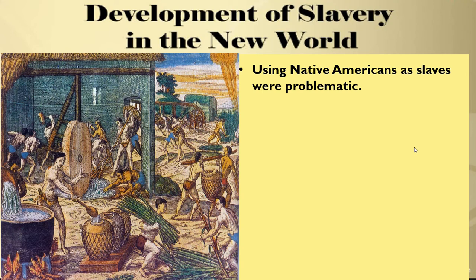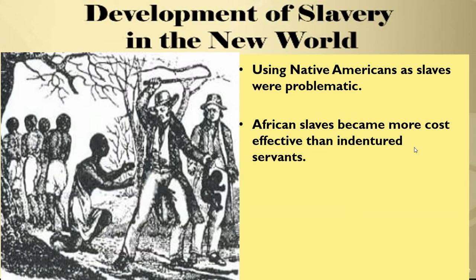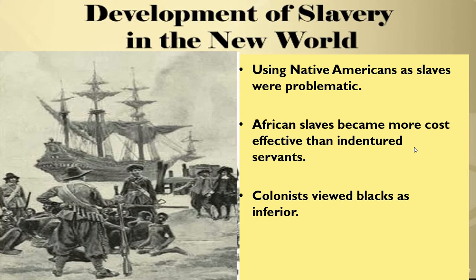Now, the development of slavery in the new world. They used to use Native Americans as slaves, but that became a problem — the Native Americans were already here when they arrived at Jamestown. So they went to Africa. Africans became more cost-efficient than using indentured servants. Why go through having someone work five to seven years and then give them freedom? Instead, they made them slaves — they just had to work and didn't get their freedom. The colonists viewed the blacks as inferior, as less than, and did not see the slaves as human beings — they saw them as property. And the slaves were servants for life.